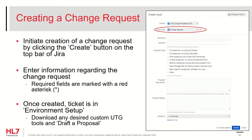The other type is Technical Correction, which is to be used only when a previously approved proposal was implemented improperly due to bugs in processor tooling and the error must be corrected to bring the source of truth back into alignment with what was decided in consensus. Next, enter a short summary about the content issue, which will serve as a convenient title. For the sponsor field, enter the HL7 workgroup or other organization that is sponsoring the proposal.